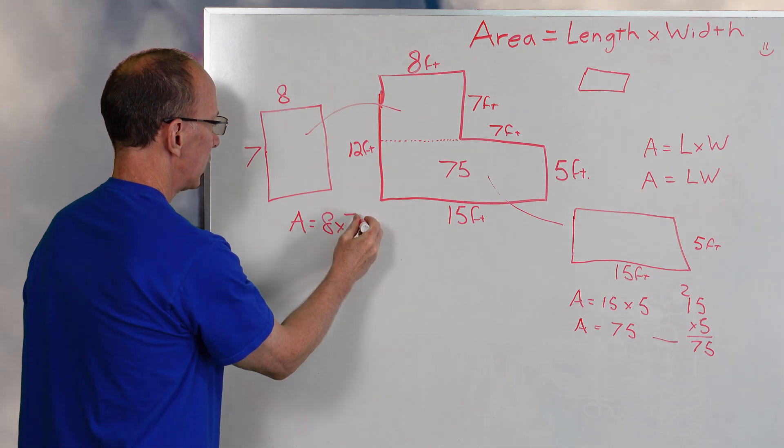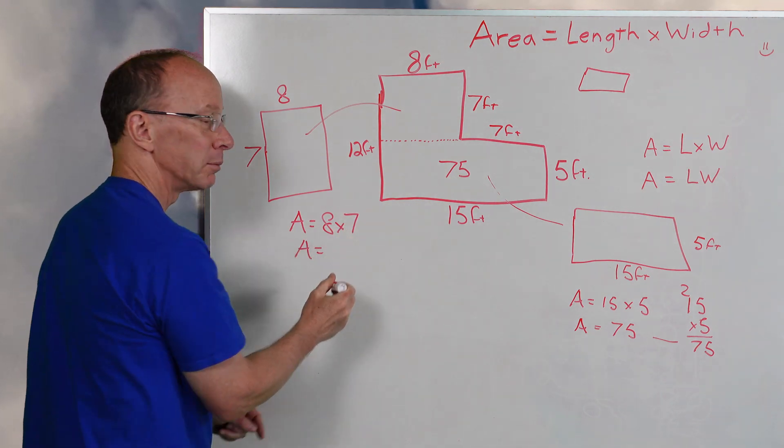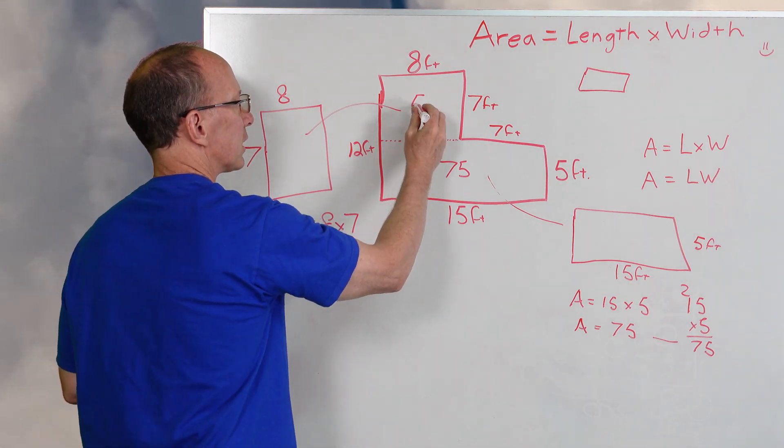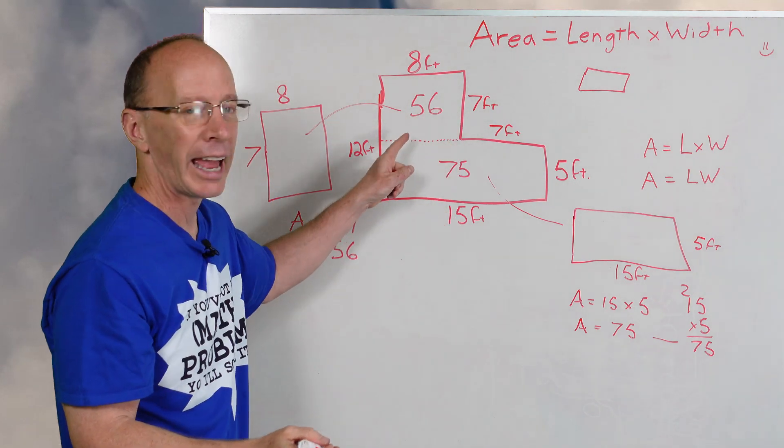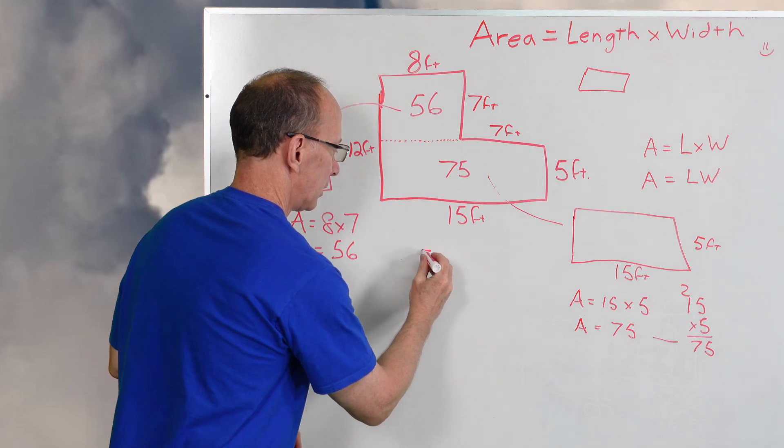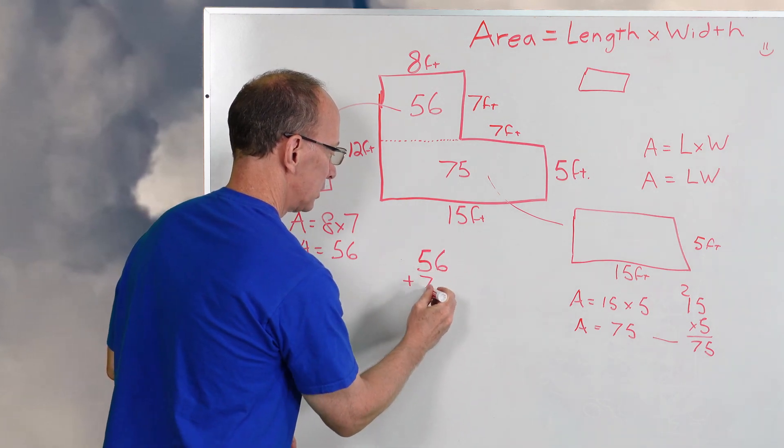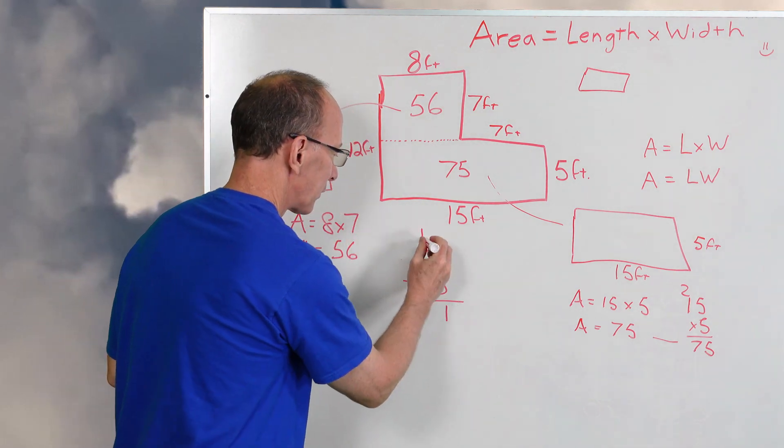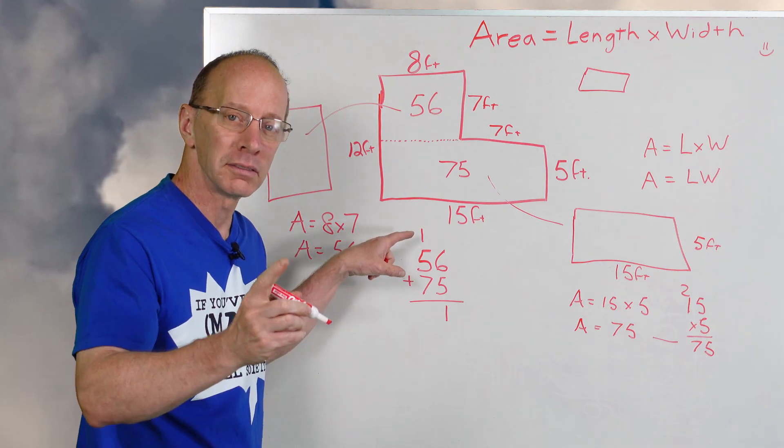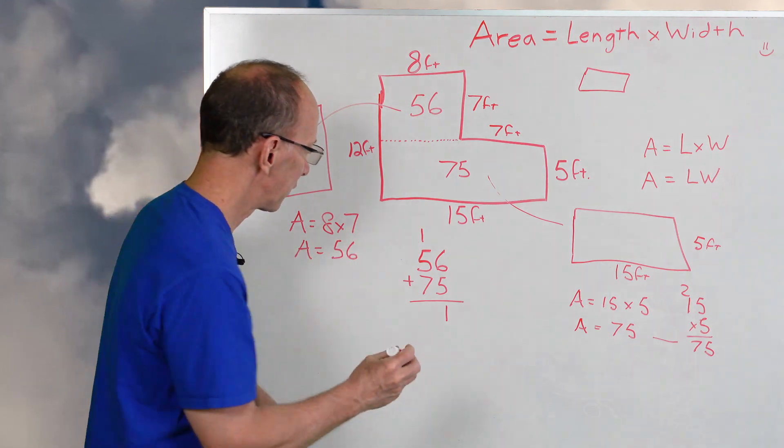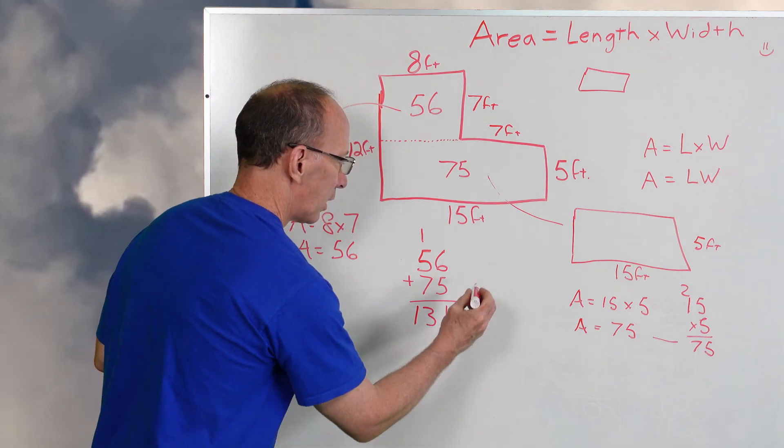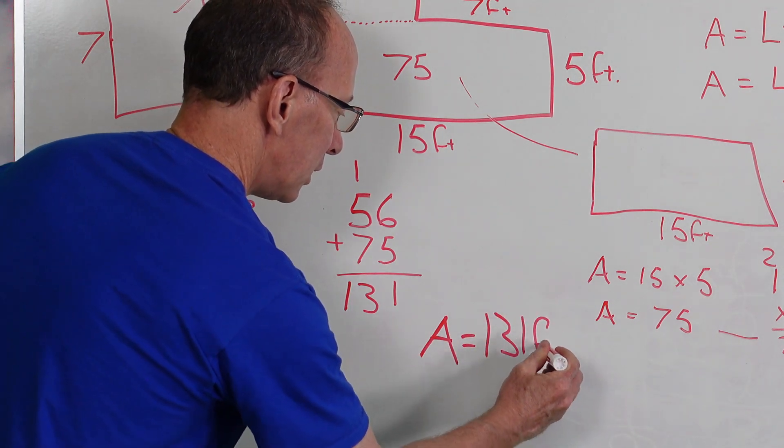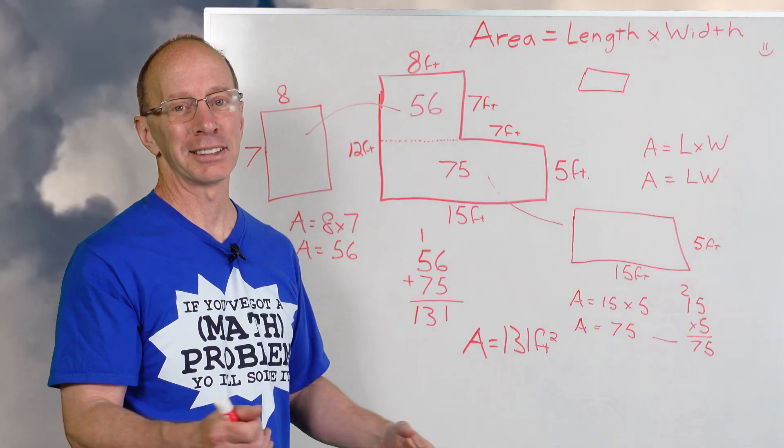8 times 7 is 56. So then I'm going to add 56 plus 75. 6 plus 5 is 11, carry the 1, and then 5 plus 1 is 6, 6 plus 7 is 13. So our total answer would be Area = 131 square feet.